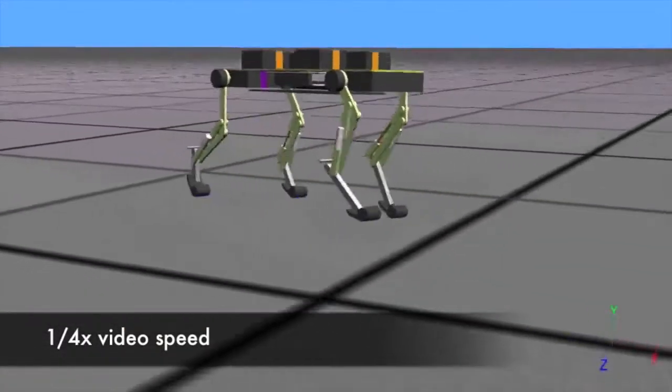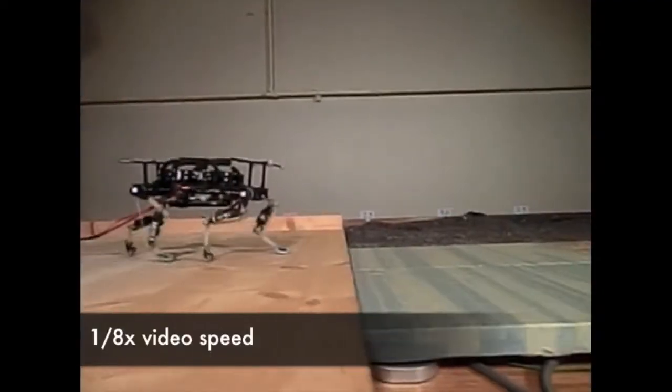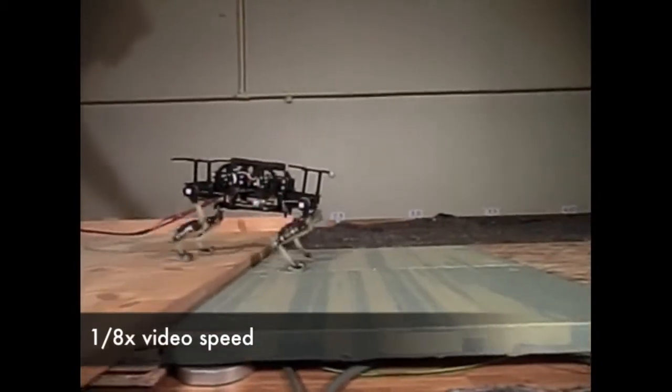Besides this very fast speed, it's also very robust. So we can have the robot running over step-down obstacles of up to 20% of its leg length.